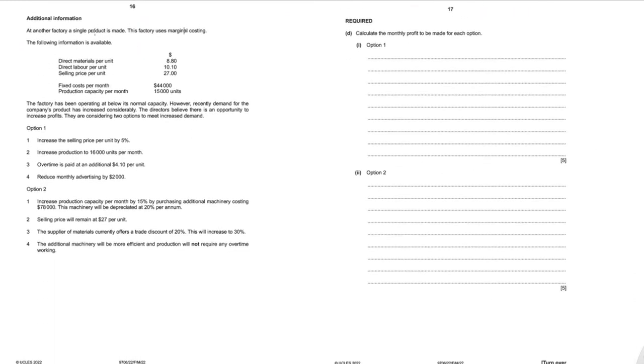At another factory using marginal costing, a single product has given direct material cost, direct labor cost, selling price, fixed cost per month, and production capacity of 15,000 units. The factory has been operating below normal capacity but demand has increased. Directors consider two options: increase the selling price by 5% — current price $27, revised price = $27 × 1.05 = $28.35; or increase production to 16,000 units per month.